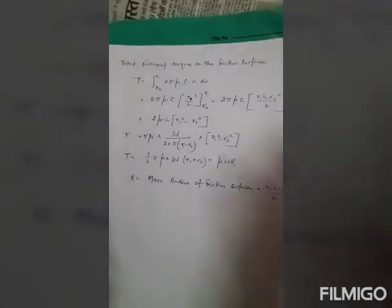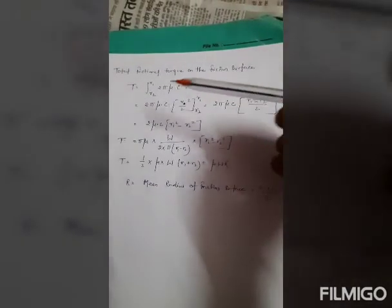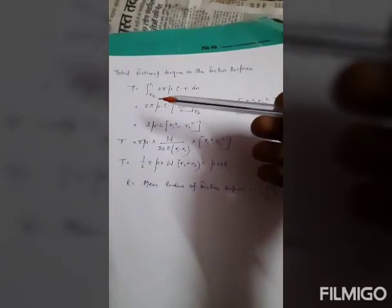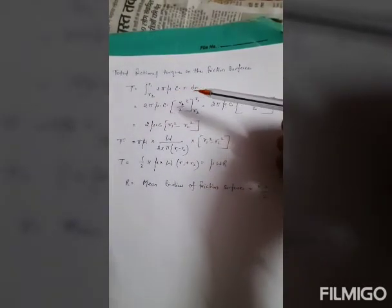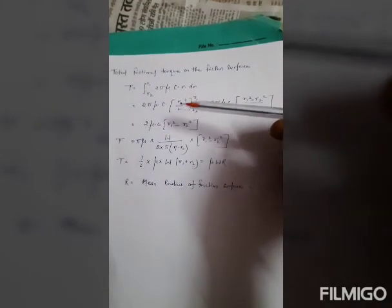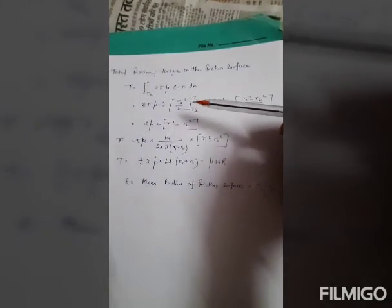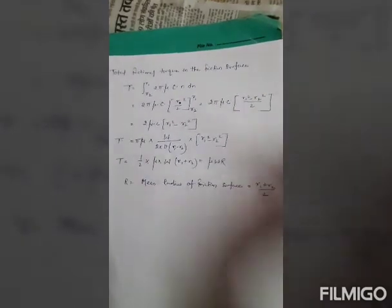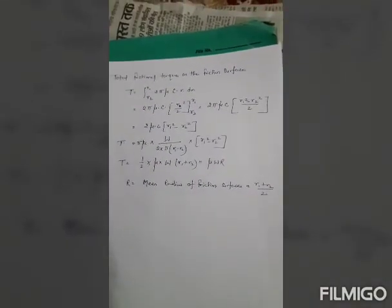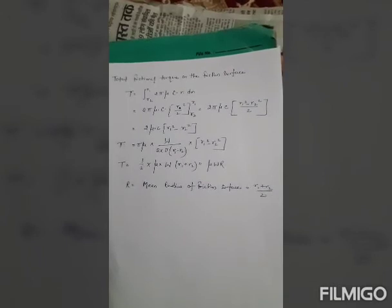Frictional torque acting on the ring TR is equal to 2πμp r square into DR. So 2πμ c upon r into r square into DR, so 2πμc into small r into DR. Total frictional torque on the frictional surface T is equal to integration r2 to r1 of 2πμc r into DR. So 2πμc r by 2, r square r1 r2. So 2πμc r1 square minus r2 square by 2.